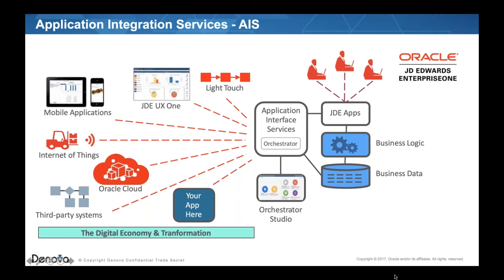The AIS server is kind of a key to all these different components that people are using — whether they're doing mobile apps, building direct integrations outside of Orchestrator, or whether they're using the Orchestrator Studio.